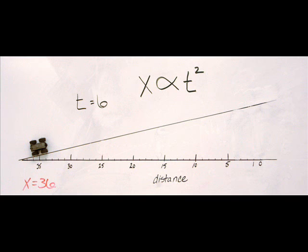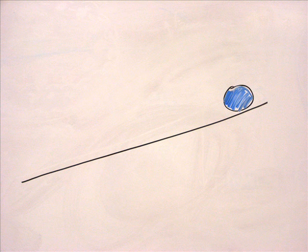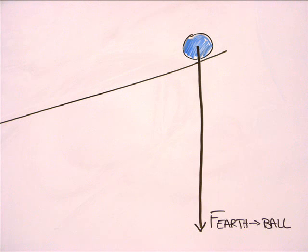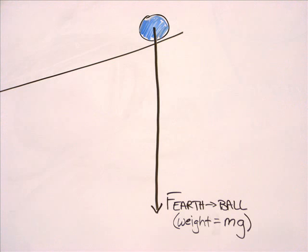So that meant that you could take a constant and associate it with the Earth's gravitational pull, some number that you could multiply by time squared to get the distance that the object falls.